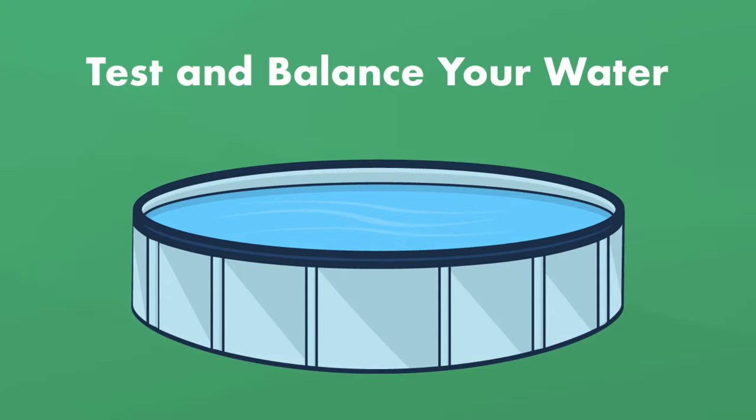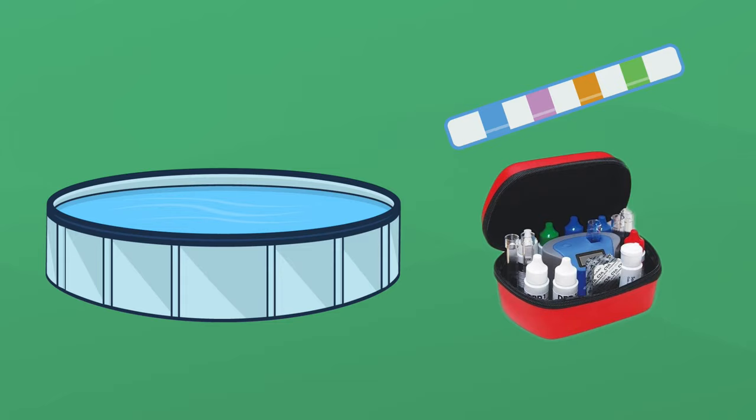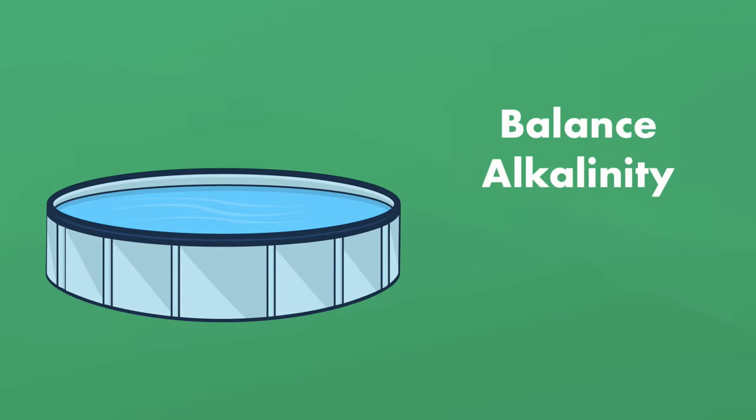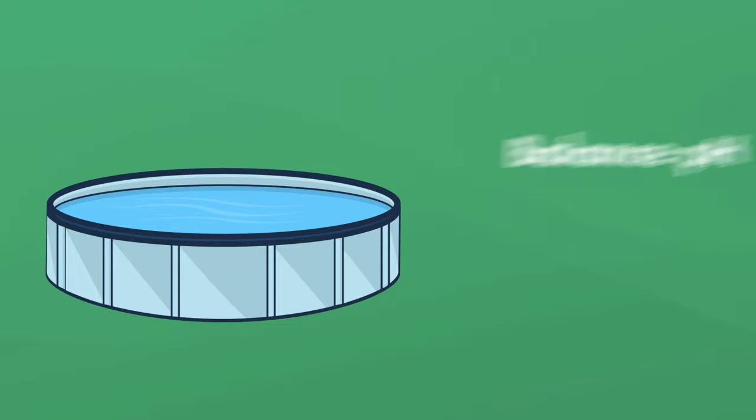First things first: test and balance your pool water. Test the water using test strips or a liquid test kit. Then, balance the alkalinity first. It should be between 100 parts per million and 150 parts per million, with 125 parts per million being ideal. Then, balance the pH level if needed. It should be between 7.4 and 7.6, with 7.5 being ideal.